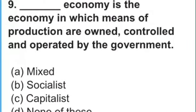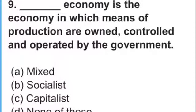Question number 9: Dash economy is the economy in which means of production are owned, controlled and operated by the government. मैंने आपको tricks भी बताई हैं कि government का main motive क्या है। तो अगर government सारे resources, means of production को own, control और operate कर रही है, So what kind of economic structure is this? Is it mixed economy, socialistic economy, capitalistic economy, or none of these?